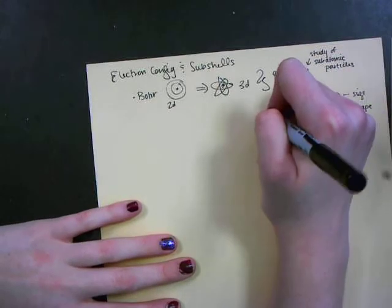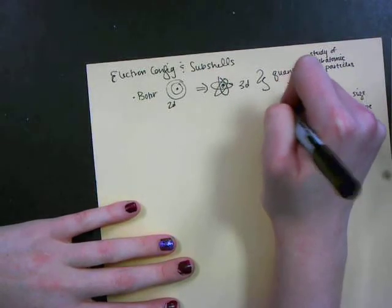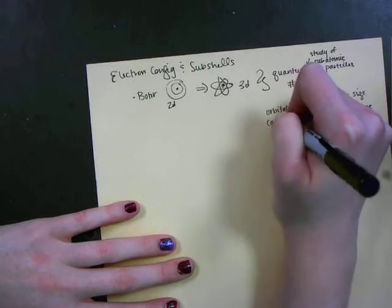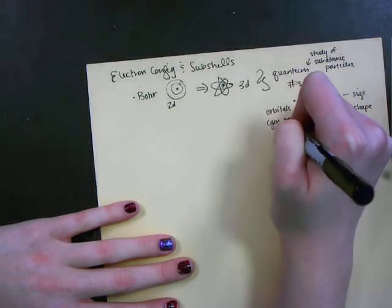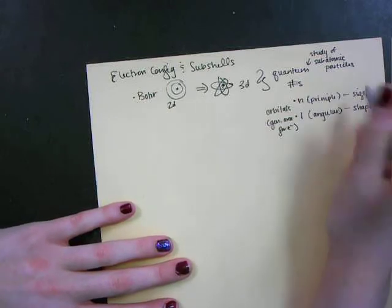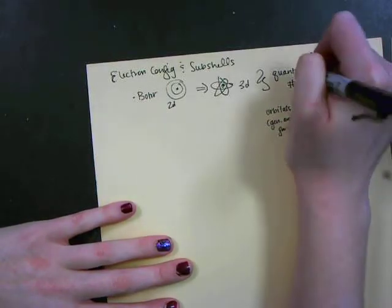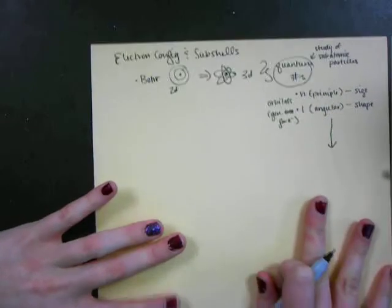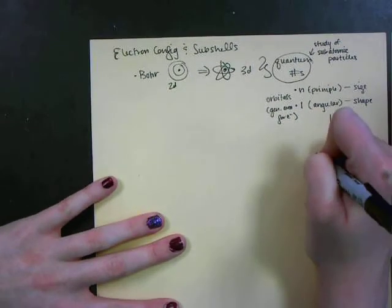This is talking about the orbitals, which is like the general area for electrons. From these quantum numbers we start to look at where the electrons actually are. Where the electrons actually are, are the sub shells.